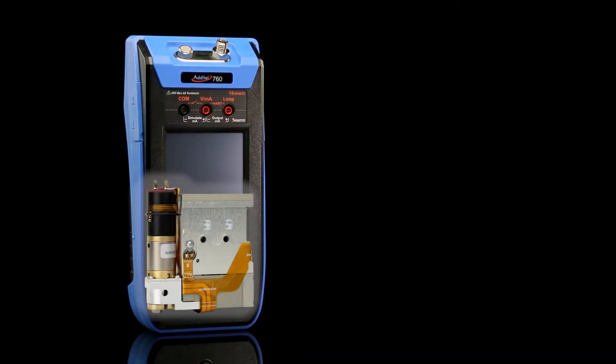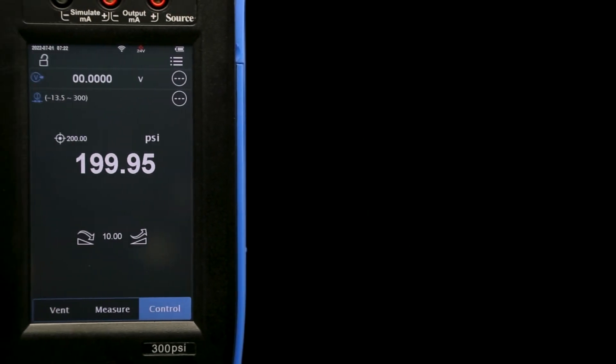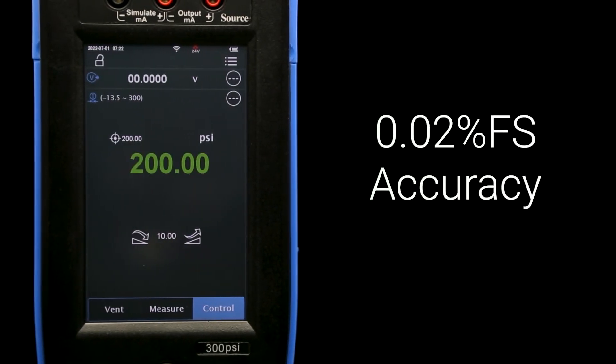Inside the 760 is an automatic pump that quickly cycles to output the pressure entered into the device, with accuracies up to 0.02% full scale.